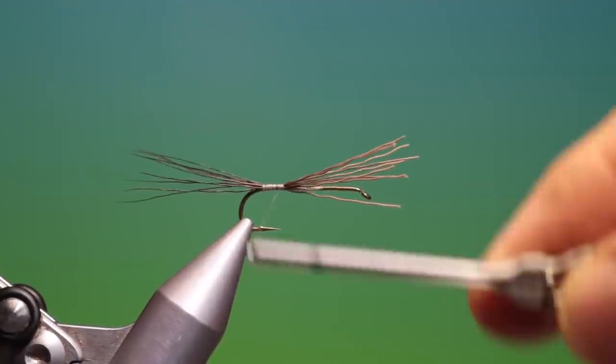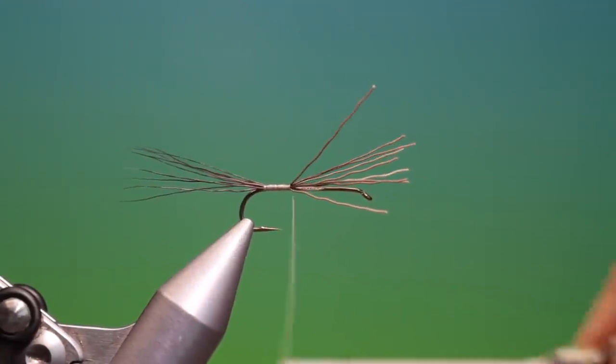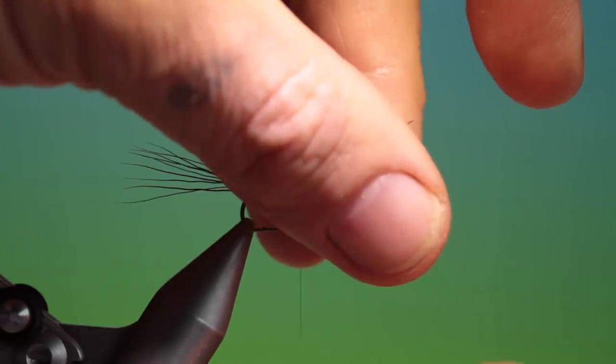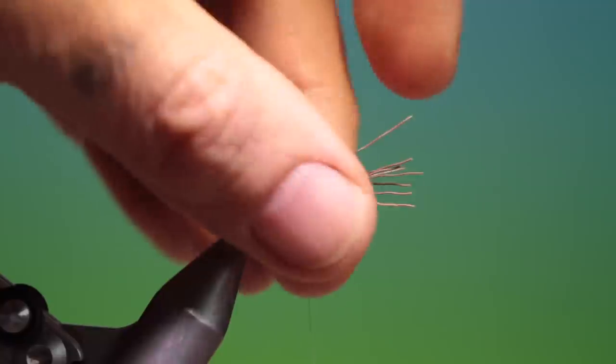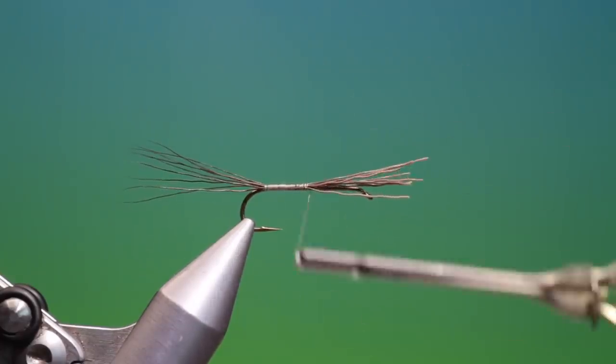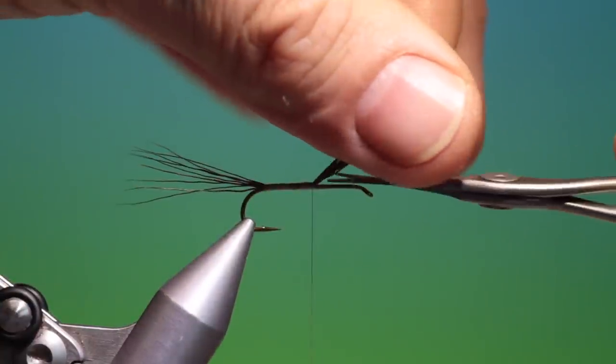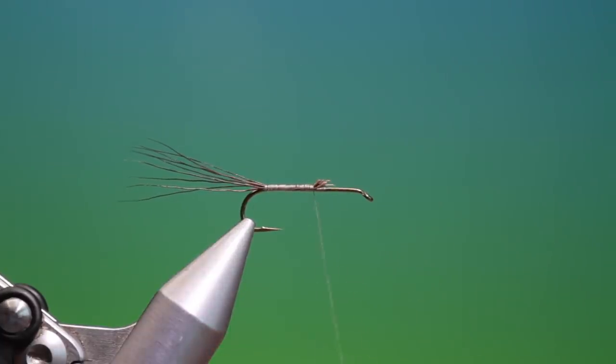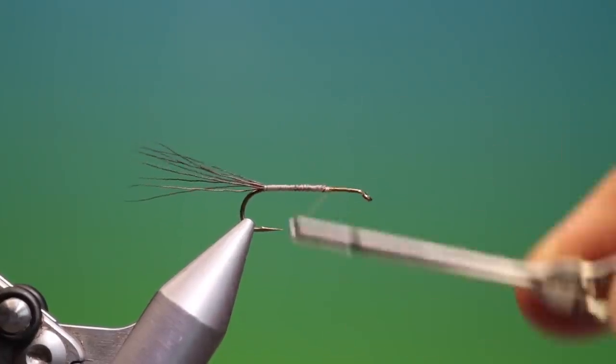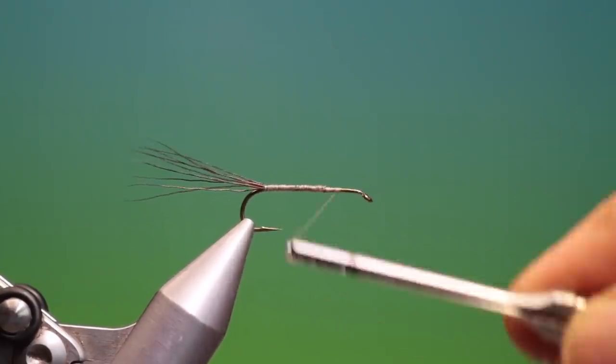And then we'll go back up over the butt ends of the moose body. Flatten my thread out again. This is a very good pattern that has worked extremely well for me for larger mayfly hatches. So we just trim off those butt ends at a slight angle. So we can pull them together, go up here, that's good. And then we want just a little foundation so we can set the wings on.